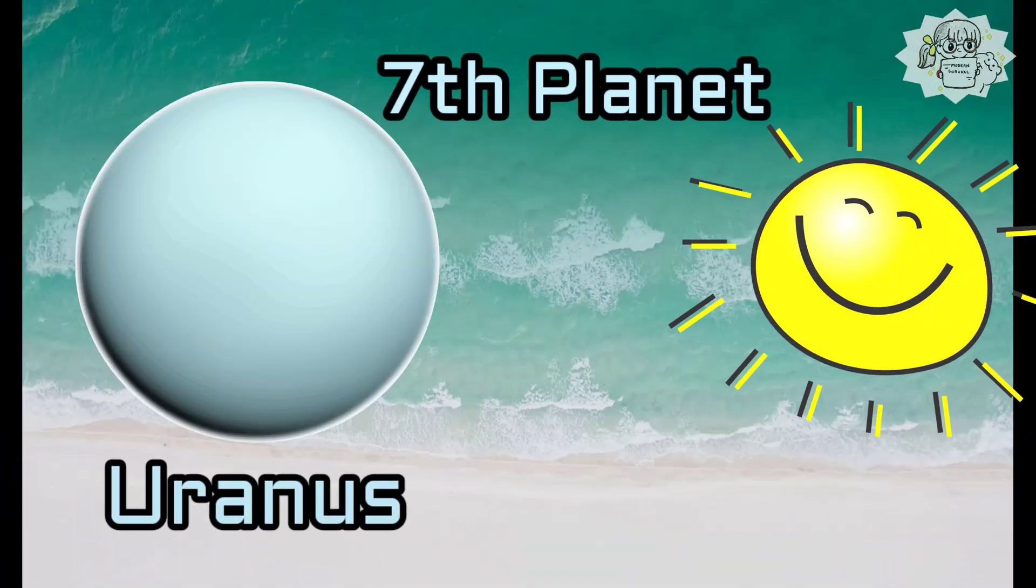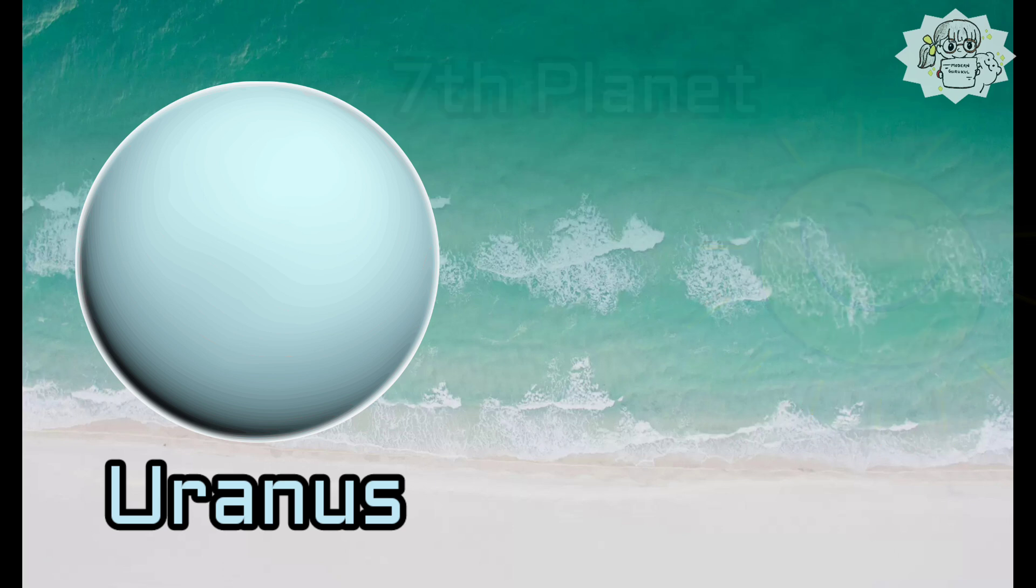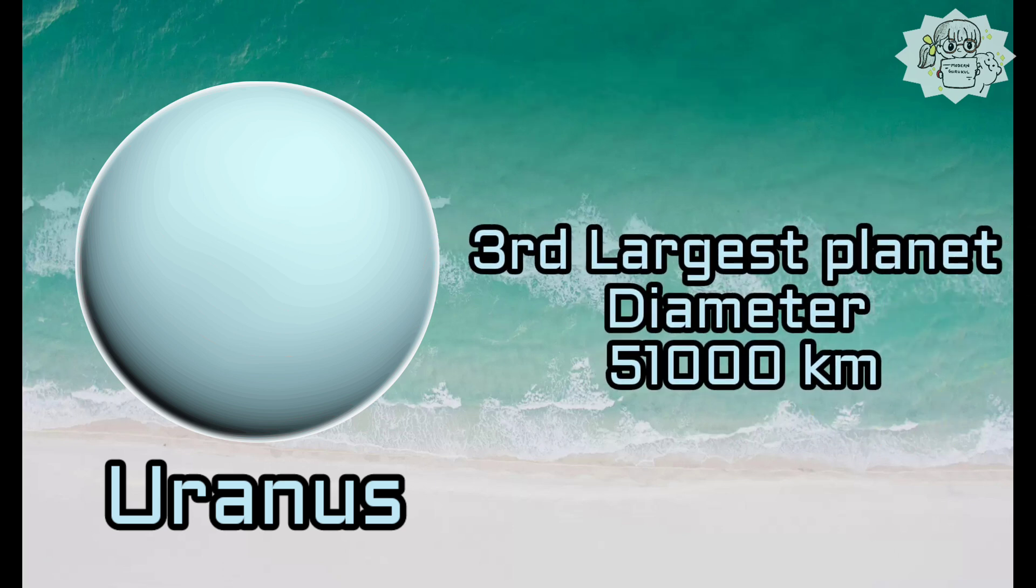Uranus is the seventh planet from the Sun and the third largest. It is a gas planet with a diameter of about 51,000 kilometers.